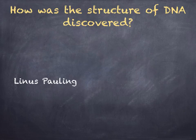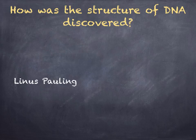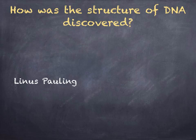Then there was Linus Pauling, who won the Nobel Prize for working out the alpha-helical structure of fibrous proteins. He started to work on the structure of DNA, looking at the three-dimensional structure and trying to model it based on molecular distances and bond angles. But his structure proved to be wrong — it did, however, form a base for other scientists, Watson and Crick.